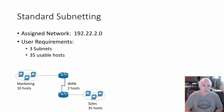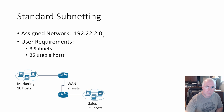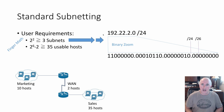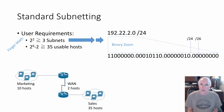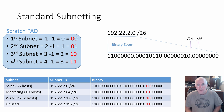We have the same user requirements and assigned network as in previous standard subnetting work. We usually add a slash 24 because that's the classical mask, then use finger math to convert our user requirements into binary zoom — where we put all that information. We binary zoom our network ID, the classical mask of slash 24, and use finger math to create slash 26, our custom subnet mask. We borrow two bits, leaving six host bits remaining for usable hosts. Using Scratchpad and dial-in, I can find the first, second, third, and fourth subnet.